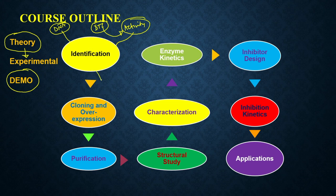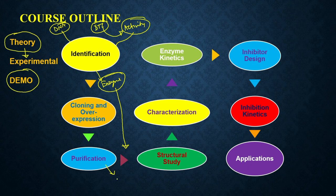Once you have identified a particular enzyme, you may want to utilize it for a particular type of application. You have to produce this enzyme in large quantities. To produce the enzyme, you have to clone it, over-express it, and then also purify it in large quantities. When you have the purified enzyme, you can also be interested in doing many kinds of characterization.